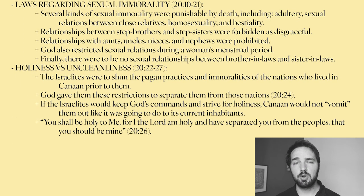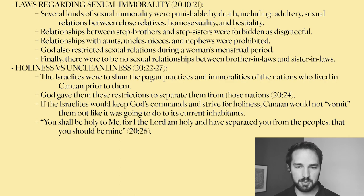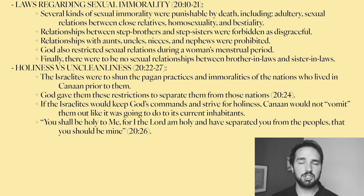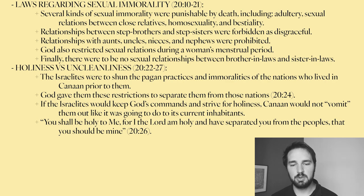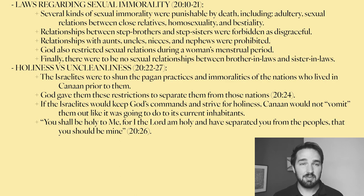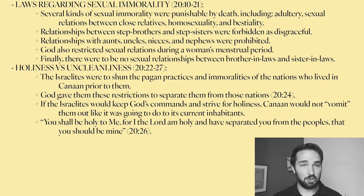In verses 10 through 21, we talk about laws regarding sexual immorality. Several kinds of sexual immorality were punishable with capital punishment: adultery, sexual relations between close relatives, homosexuality, and bestiality. Relationships between stepbrothers and stepsisters were forbidden as disgraceful. Relationships with aunts, uncles, nieces, and nephews were prohibited. Sexual relations with a woman during her menstrual period were forbidden. And there would be no sexual relationships between brother-in-laws and sister-in-laws. You might think these are common sense, but even in the history of Israel we've already read — Jacob, his 12 sons — a lot of these things went on. So it was important for these to be clarified for the nation moving forward.